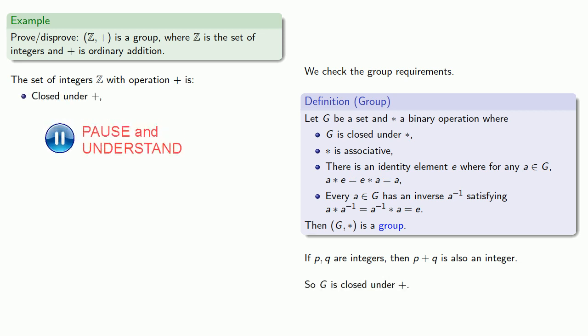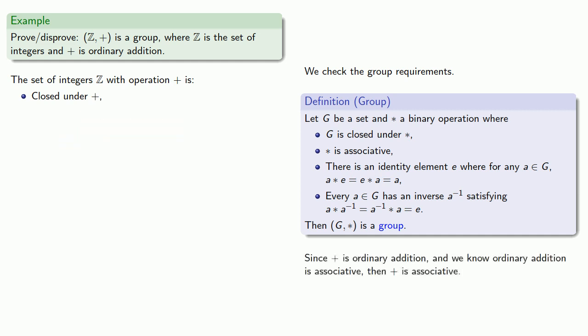Are we associative? Since plus is ordinary addition, and we know ordinary addition is associative, then plus is associative. Now, strictly speaking, we should prove that it's associative, but that requires building up a theory of the integers, and we'll do that in a different course.